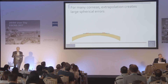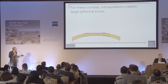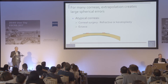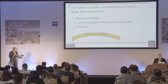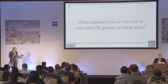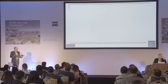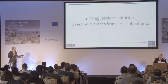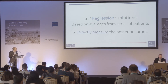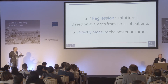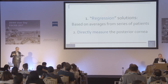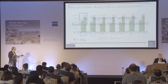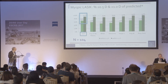In abnormal corneas, as Oliver Findl just discussed, this extrapolation is clearly off — patients who have had refractive corneal surgery, keratoplasty, or have ectatic disorders. We use two approaches: regression solutions based on averages, or direct measurement of the posterior corneal surface. There's also an intermediate option that Graham Barrett uses in his formula — combining regression with additional data to calculate posterior corneal curvature — available in the Barrett suite on the IOL Master.